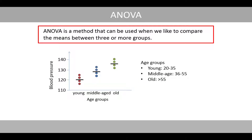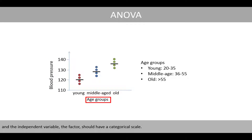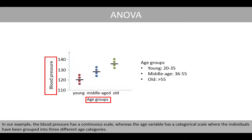ANOVA is a method that can be used when we like to compare the means between three or more groups. The dependent variable should have a continuous scale, and the independent variable, the factor, should have a categorical scale. In our example, the blood pressure has a continuous scale, whereas the age variable has a categorical scale, where the individuals have been grouped into three different age categories.